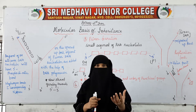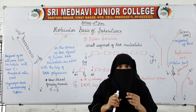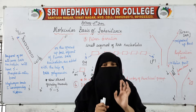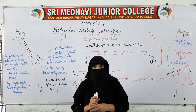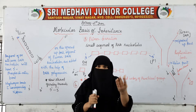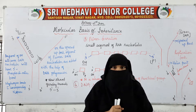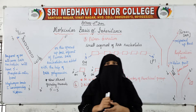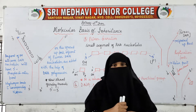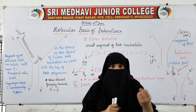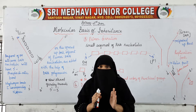Helicase binds at the origin of replication (ori-site), which is a special nucleotide sequence from where the DNA helix will open up. In prokaryotes there is only one ori-site, but in eukaryotes there are many ori-sites from where the DNA starts to open up. The enzyme topoisomerase, along with single-stranded binding proteins, helps stabilize the opened strand. With the help of topoisomerase and helicase, the DNA strand opens up and stabilizes.